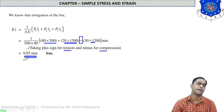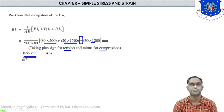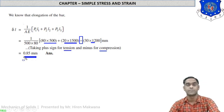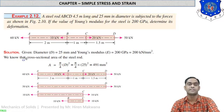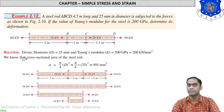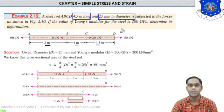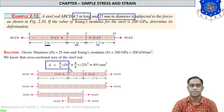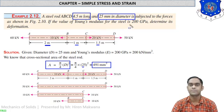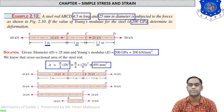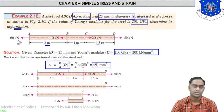Let us look at the third and final numerical. A 4.5-meter-long rod ABCD is divided into 2 m, 1 m, and 1.5 m sections. It has a 25 mm diameter, so the cross-sectional area = (π/4) × 25² = 491 mm². Young's modulus for steel = 200 GPa = 200 kN/mm². We need to determine the deformation.